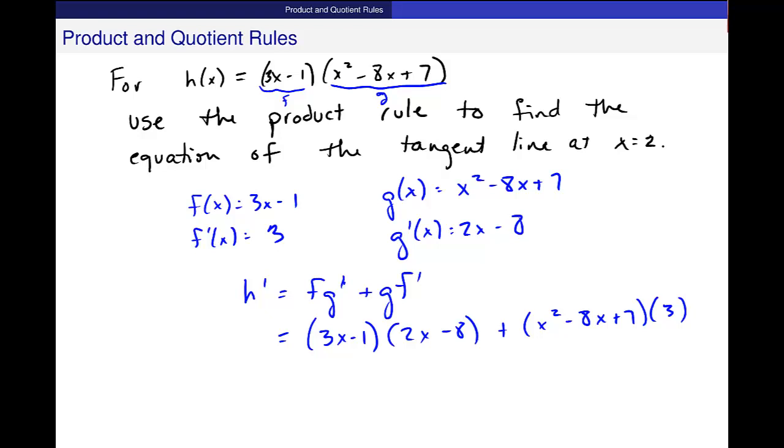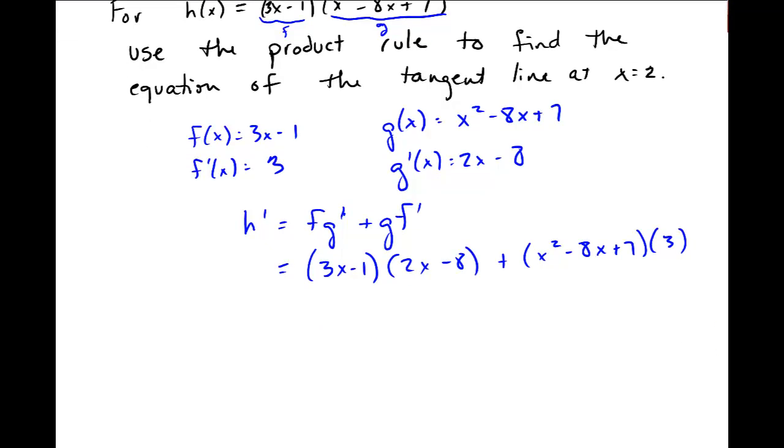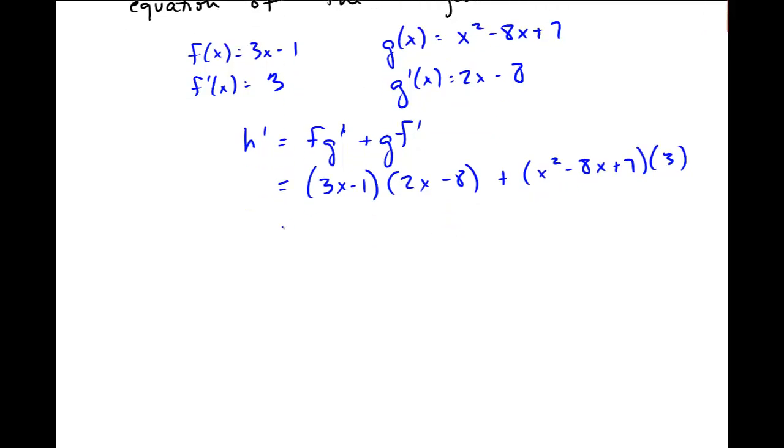Let's go ahead and simplify this to get it in simplified form. So I'll FOIL this out, 6x squared, and my outer terms are minus 24x. I'll just do those separately, minus 2x and plus 8, plus 3x squared minus 24x plus 21. And I get 9x squared, and I get a negative 24, a negative 2, and another negative 24. So that gives me I think negative 50x. Is that what you guys get?